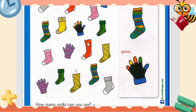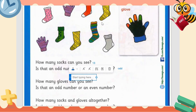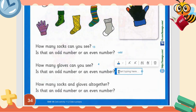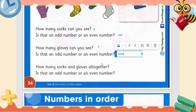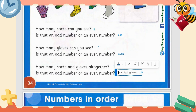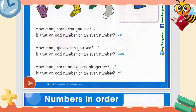There are four gloves here. Is that an odd number or even number? Even — because four gloves are in pairs: 2 plus 2. So they are even because they can make a pair. How many socks and gloves are there altogether? 13 plus 4 is 17. Is 17 an odd number or even number? Odd number — because 17 total cannot make complete pairs. If it were 18, then they could make 9 pairs. But 17 is an odd number, so they cannot make a pair.